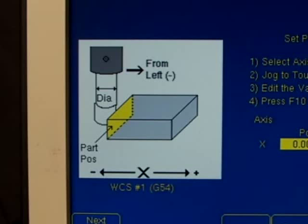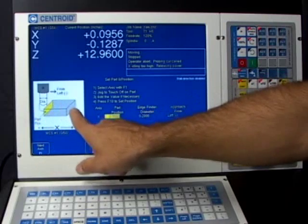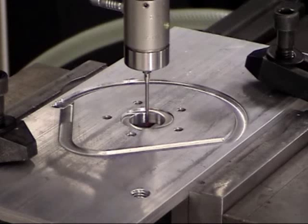Well, the graphic shows an edge finder here. We could use this screen to use an edge finder and set a zero position on an edge, whether it be the left or the right hand side of the block. But in our case, we're setting a zero position in the center of a circular pocket.